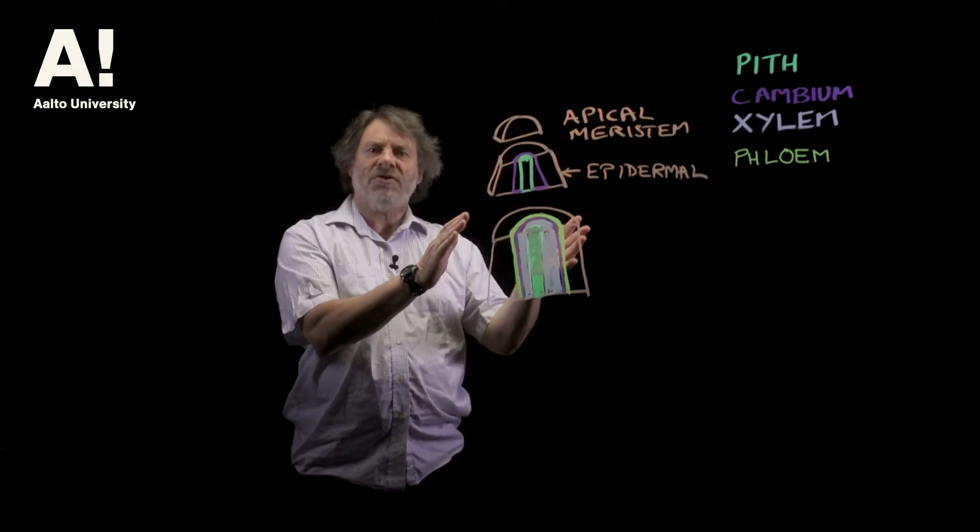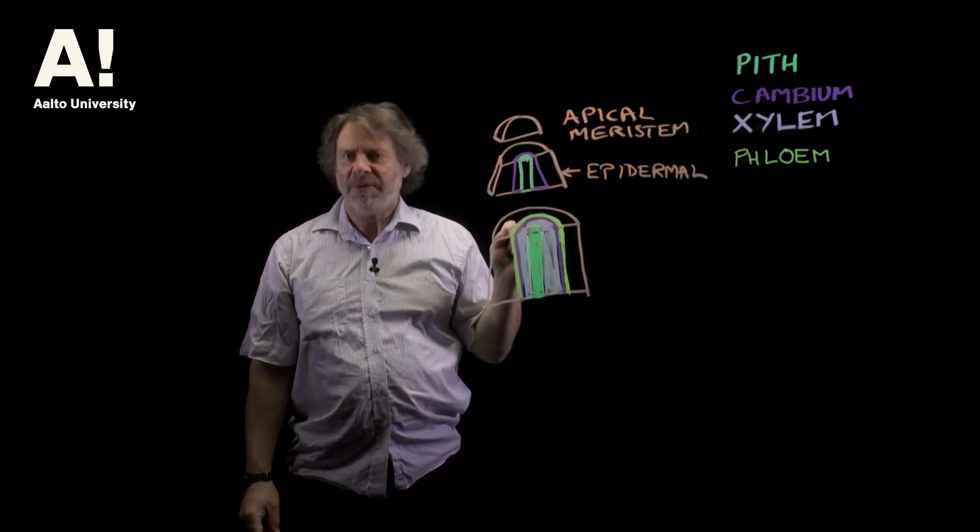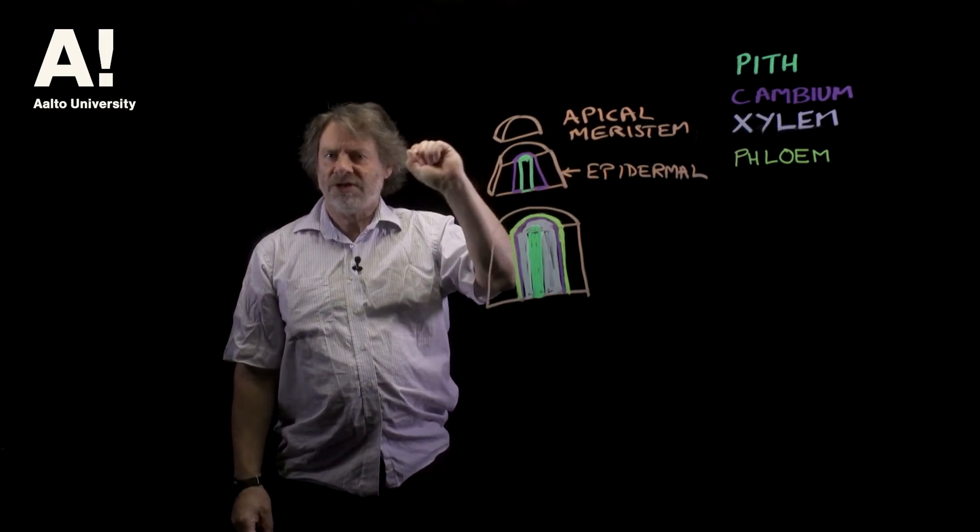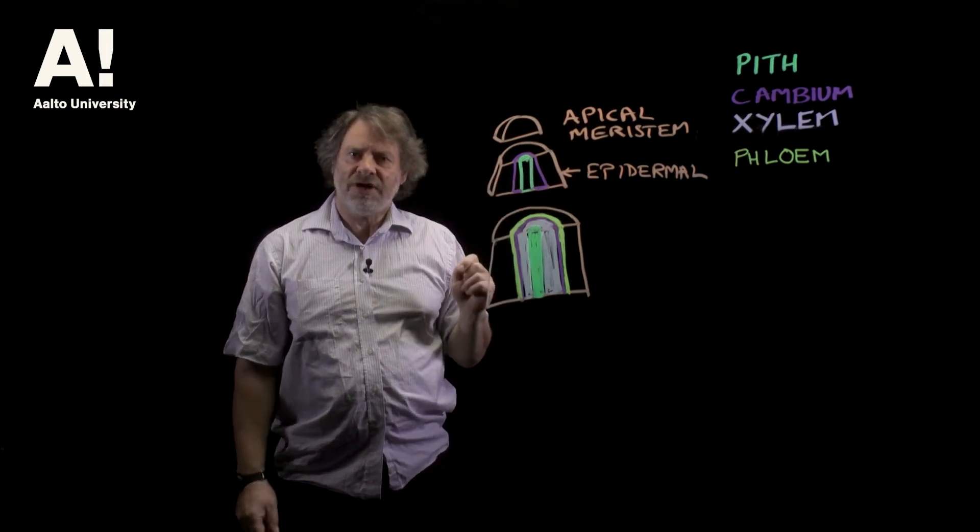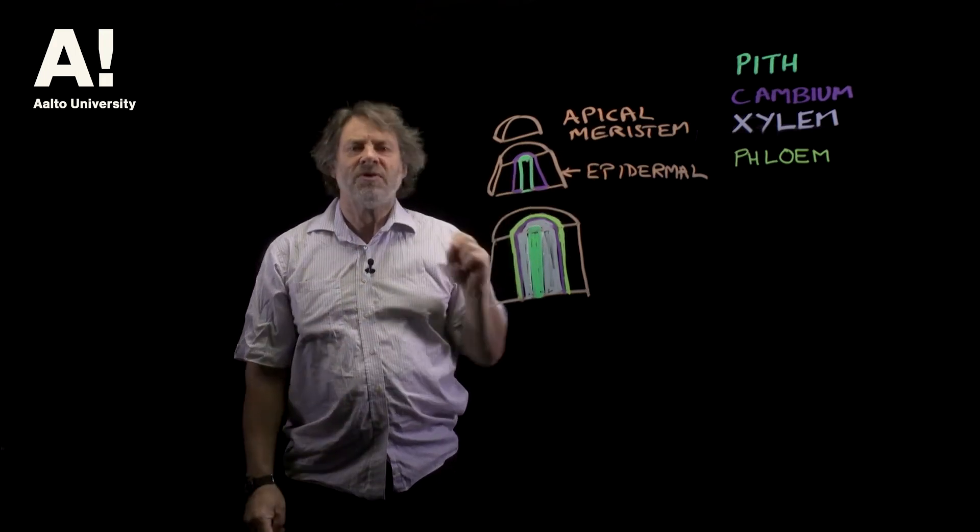This is the basis of wood formation in trees. We have something called an apical meristem which is right at the top, the leader of a tree, or it's at the branches, the tips of branches, or any budding point you'll have an apical meristem.